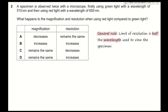Question 2: a specimen is observed twice with a microscope — first using green light with a wavelength of 510 nanometers, which has a shorter wavelength, then using red light with a wavelength of 650 nanometers, with a larger wavelength. What happens to the magnification and resolution when using red light compared with green light? As we increase or decrease the wavelength, the magnification is not altered — it always stays the same.